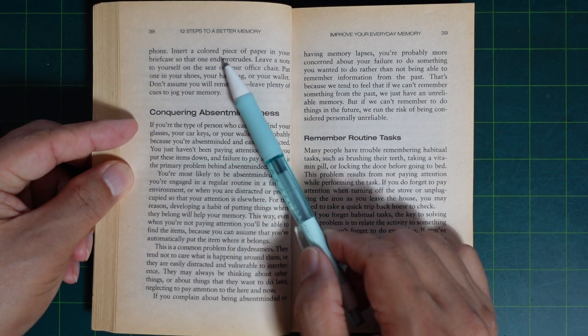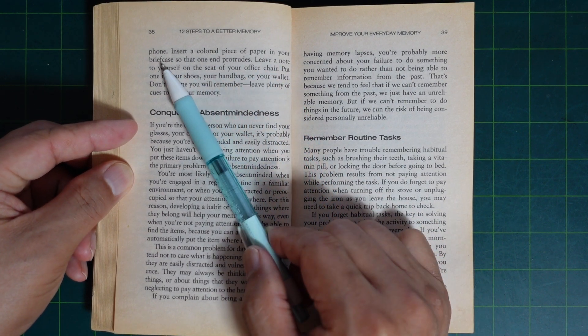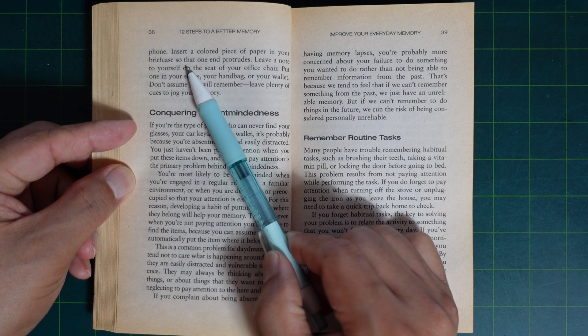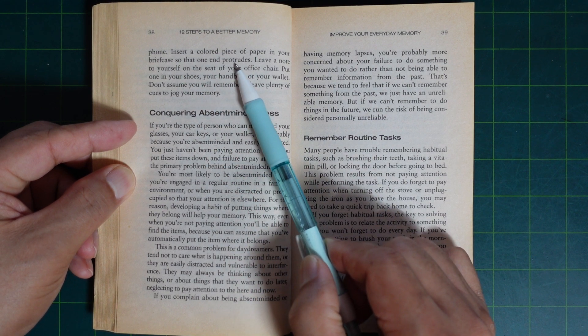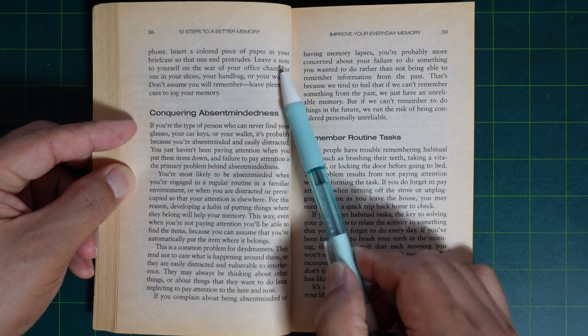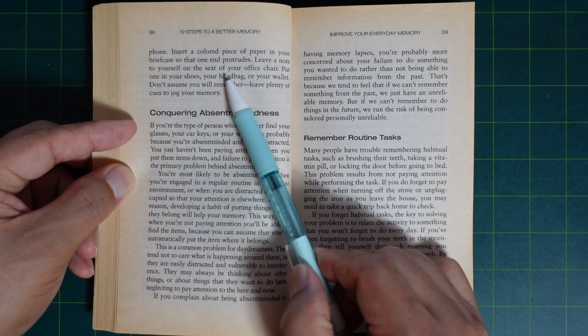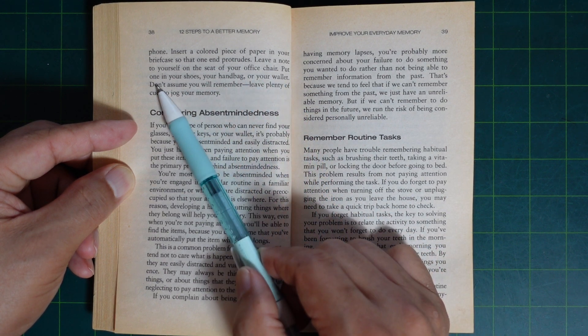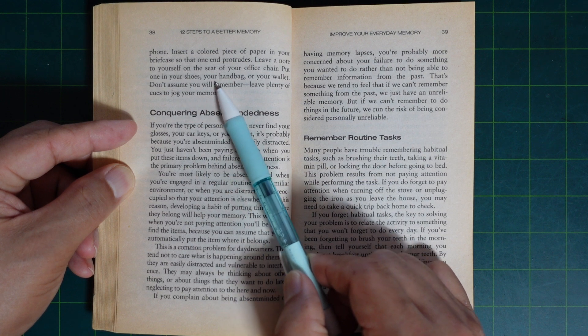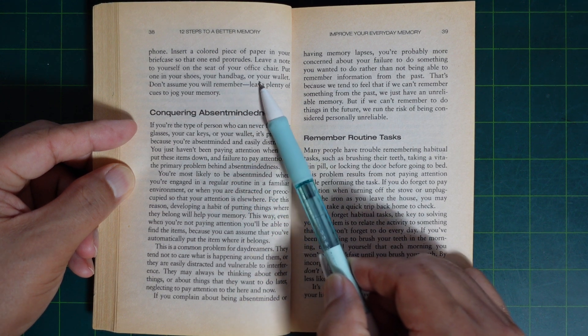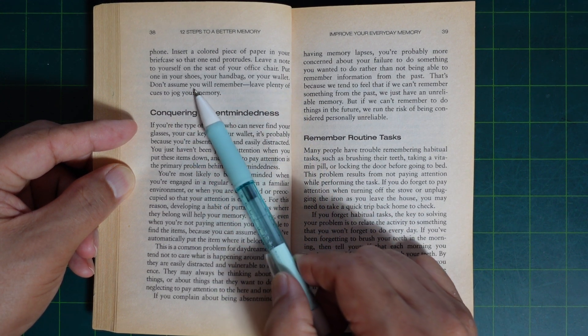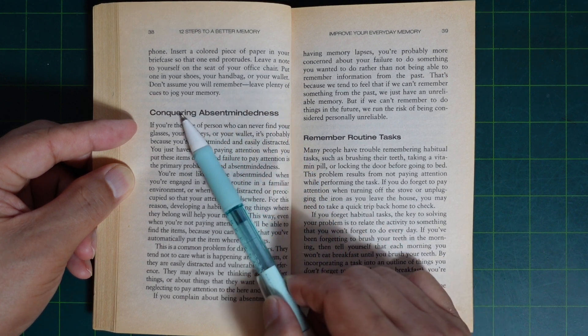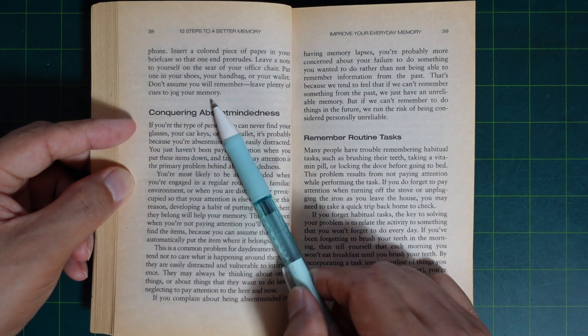Insert a colored piece of paper in your briefcase so that one end is sticking out. Leave a note to yourself on the seat of your office chair. Put one in your shoes, your handbag, or your wallet. Don't assume you will remember. Have plenty of cues to jog your memory.